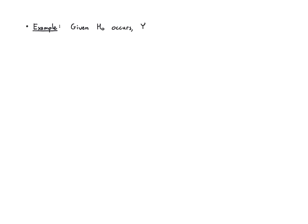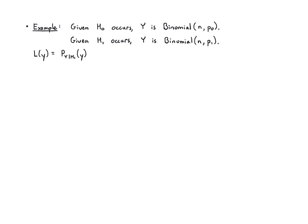Let's work a couple of examples. In this example, under H0, Y is Binomial(N, P0), and under H1, Y is Binomial(N, P1). Let's write the likelihood ratio. We have two different binomial PMFs with different parameters P0 or P1. So we get N-choose-Y times P1 to the Y times (1 minus P1) to the (N minus Y), divided by N-choose-Y times P0 to the Y times (1 minus P0) to the (N minus Y).